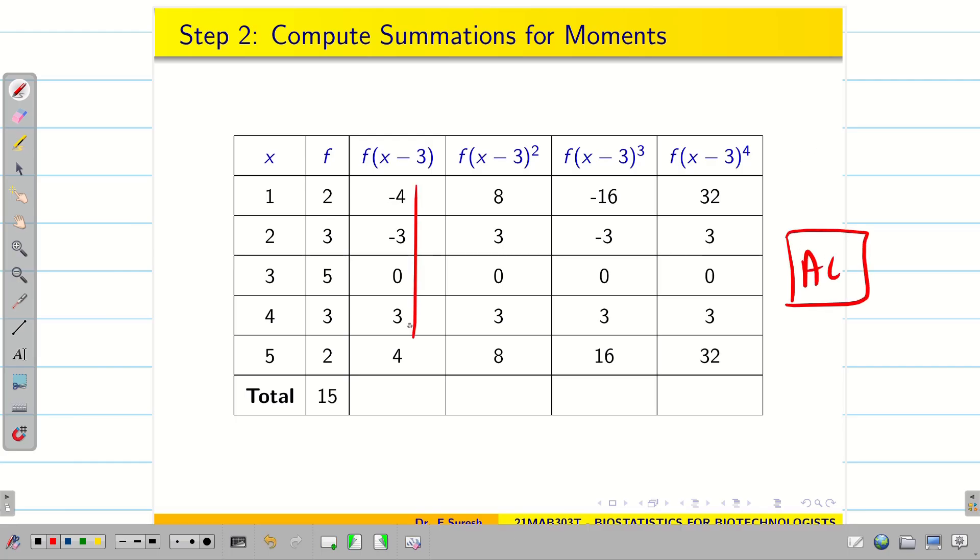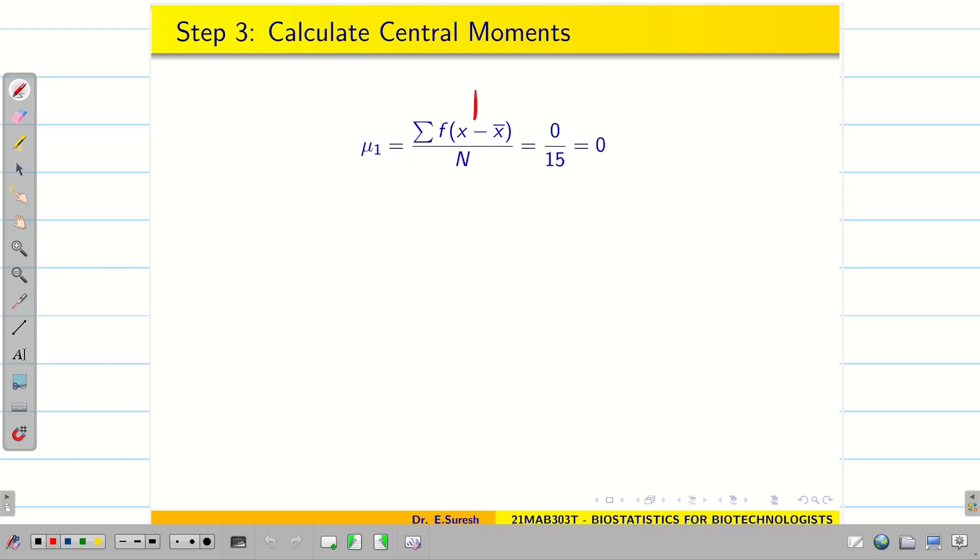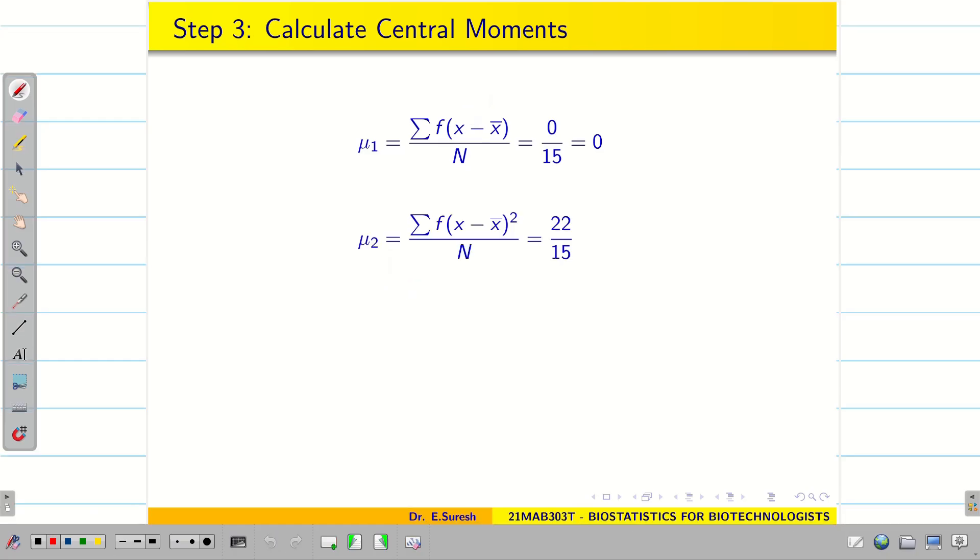Once that is done, press AC button. Now find the total in each column: 0, 22, 0 and 70. Now let us find all the 4 central moments. Mu1 is 0 because the total is 0. Mu2 it is going to be 22 by 15. You can write the decimal. Mu3 is 0 because the sum is 0. And mu4 is 70 by 15. Don't simplify. Use your calculator and find decimals.